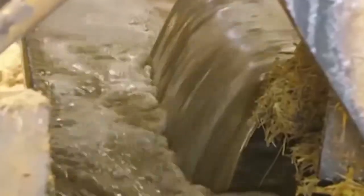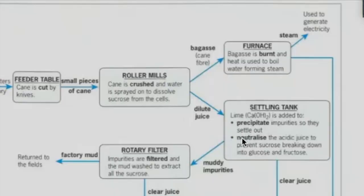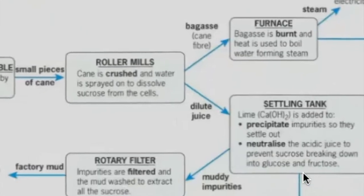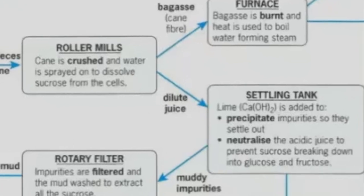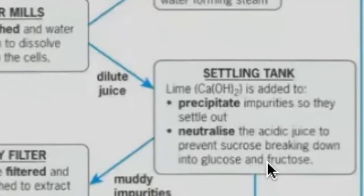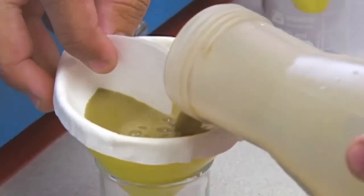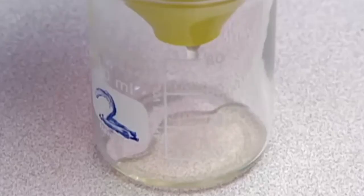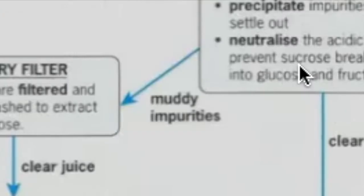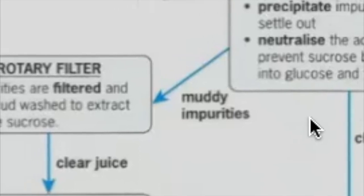From the roller mill, we get the dilute juice and the juice around there is about 16%. They would need to eventually get it concentrated down, but before they have to do what we call the clarification. So they add lime, that's calcium hydroxide. They add it for two things here. It's to precipitate out the impurities so that the impurities can settle out. And it's also to neutralize the acidic juice to prevent the sucrose from breaking down into glucose and fructose. So from this clarification process, you will get the clear juice and you will get the muddy impurity. The muddy impurities, they filter it further and they wash it again to get all the sugar they can get from the mud. Then the mud now is returned to the fields to help with the fertilization.